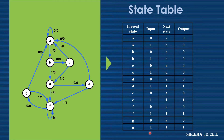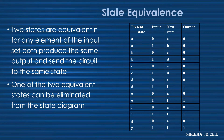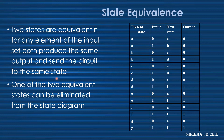State equivalence: two states are equivalent if, for any element of the input set, both produce the same output and send the circuit to the same state. One of the two equivalent states can be eliminated from the state diagram. So this is the state table with the seven states — let us compare each and every state.